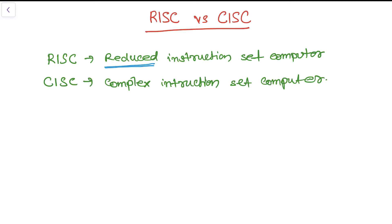In a CISC architecture there are more number of instructions and those instructions are too complicated. RISC is a computer which only uses simple commands that can be divided into several instructions which achieve low-level operations within a single clock cycle. In fact, all the instructions in RISC are single clock cycle executed — those instructions take only a single clock cycle to execute fully.